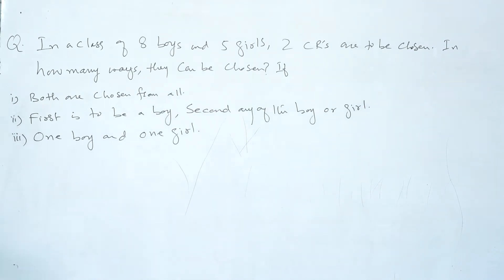So last time I asked you about this problem. In a class of eight boys and five girls, two class representatives are to be chosen. In how many ways can they be chosen if both are chosen from all, first is to be a boy, second any boy or girl, one boy and one girl.